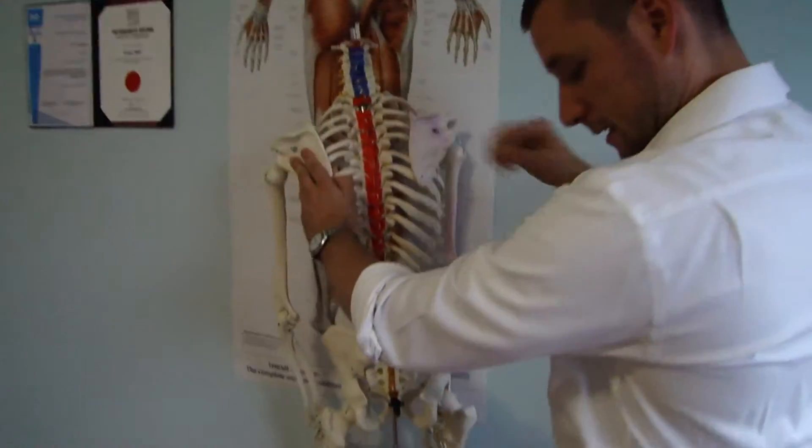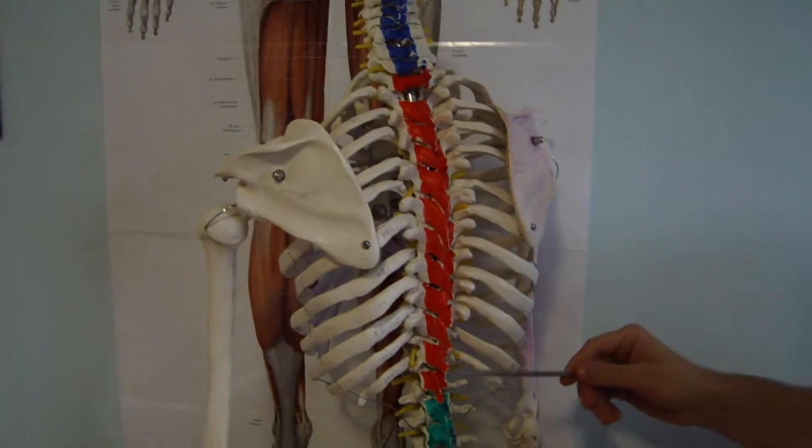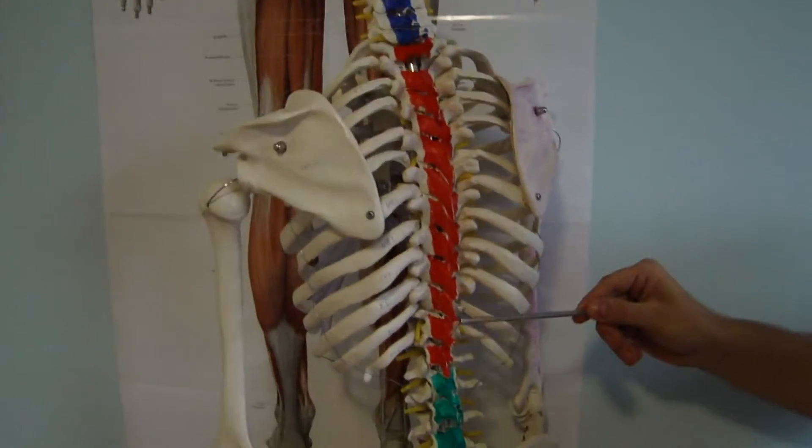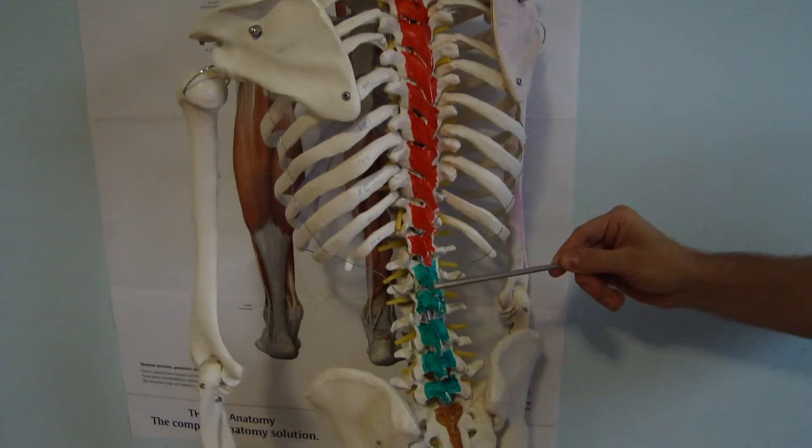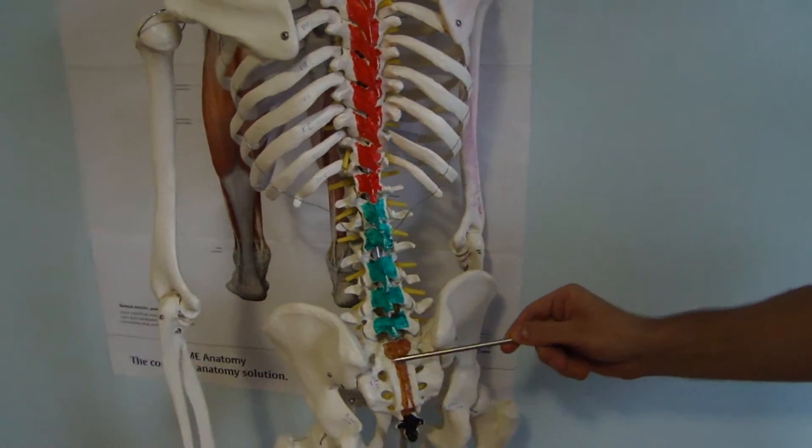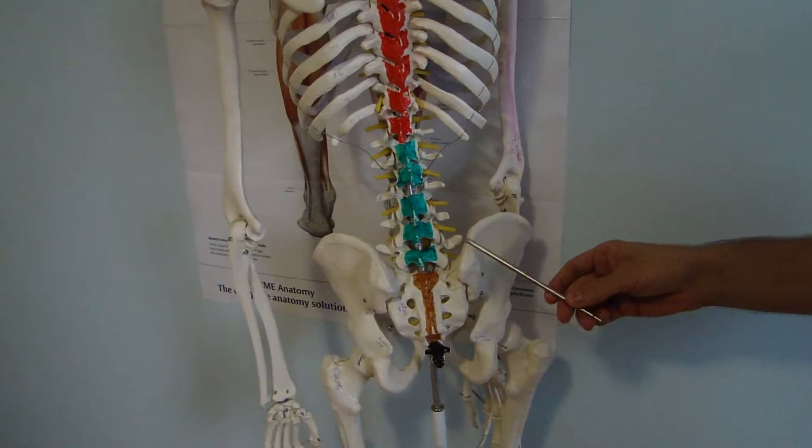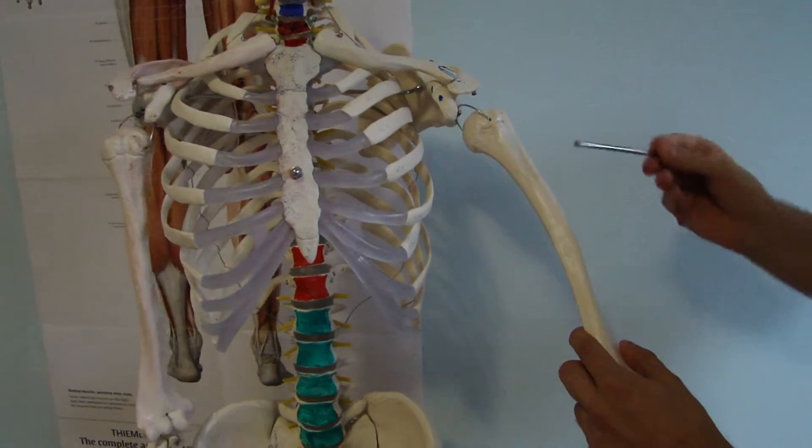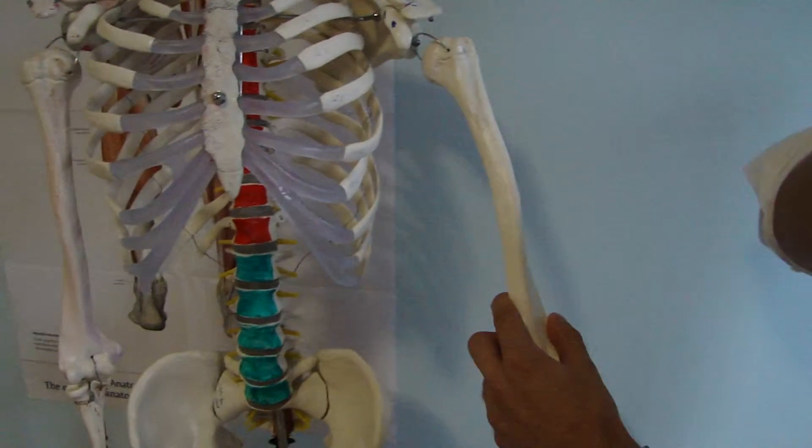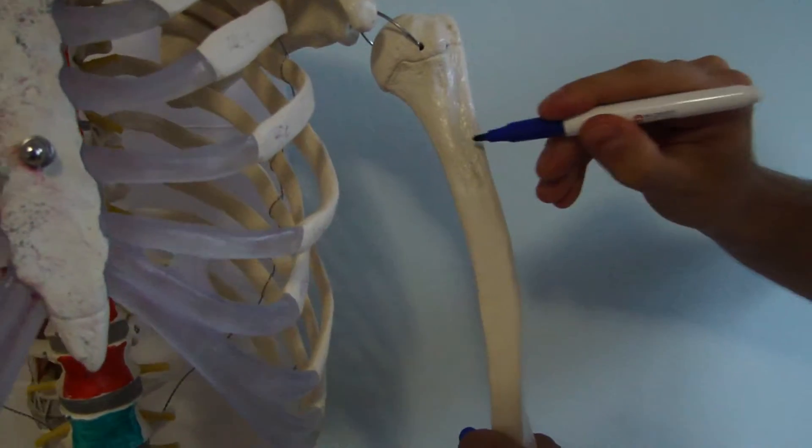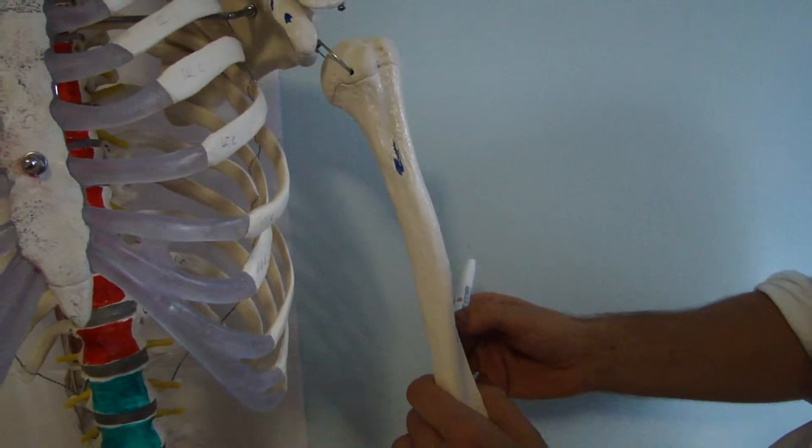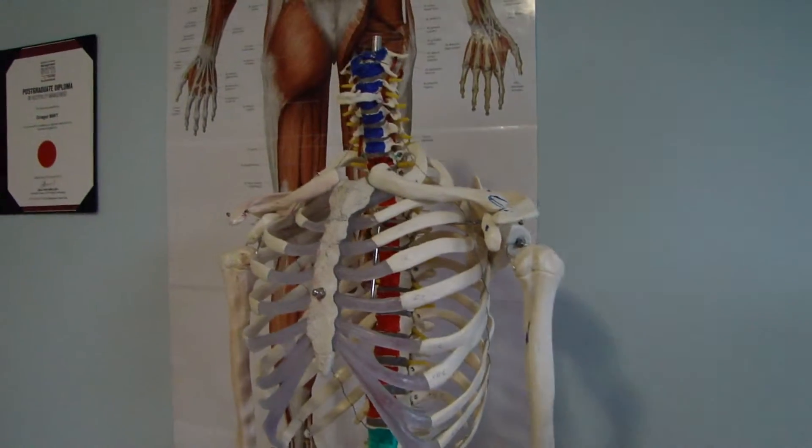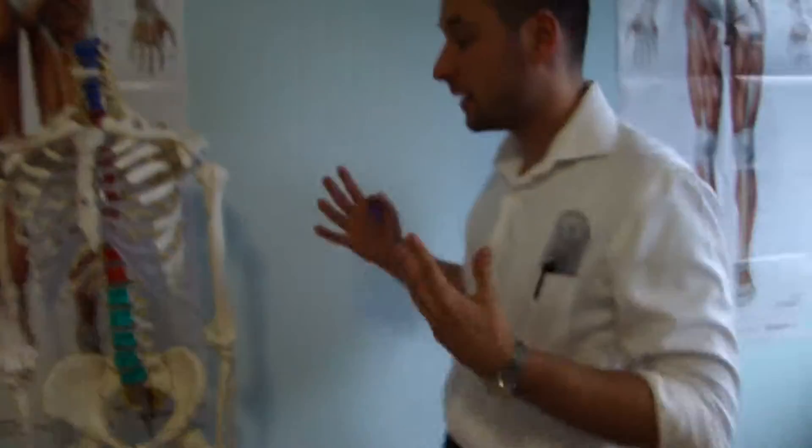If we focus now on latissimus dorsi, it originates from the spinous processes of six inferior thoracic vertebrae and all spinous processes of lumbar vertebrae, posterior surface of sacrum and posterior surface of iliac crest. And then latissimus dorsi inserts on the floor of intertubercular groove, basically around here, just proximal to insertion of teres major. The nerve supply for latissimus dorsi is thoracodorsal nerve.